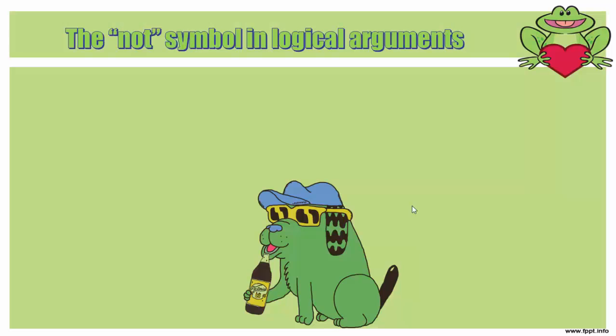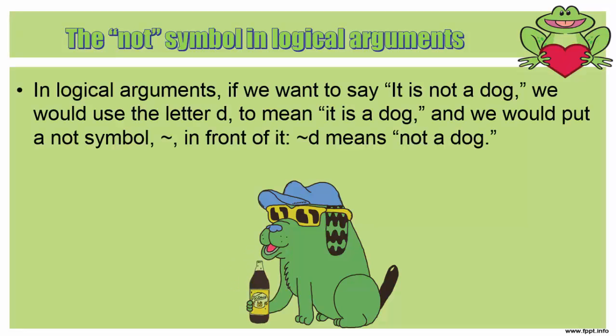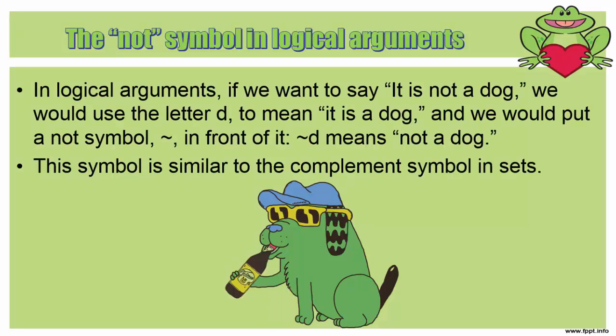The last type of argument we're going to discuss is the not symbol in a logical argument, or what it means to be not something. In logical arguments, if we say it is not a dog, we would use the letter D to mean it's a dog, and then we would put a tilde symbol in front of it to mean not a dog. This symbol is similar to the complement symbol in sets.